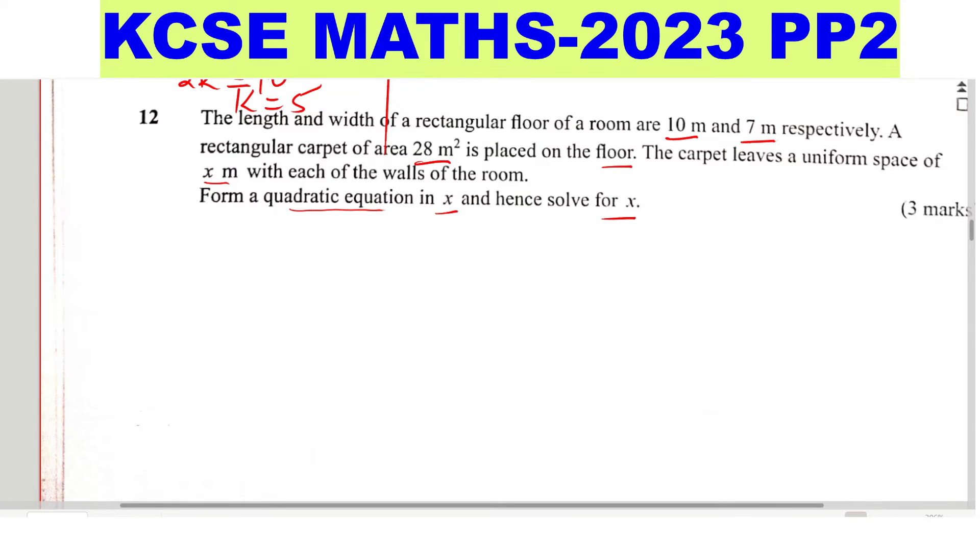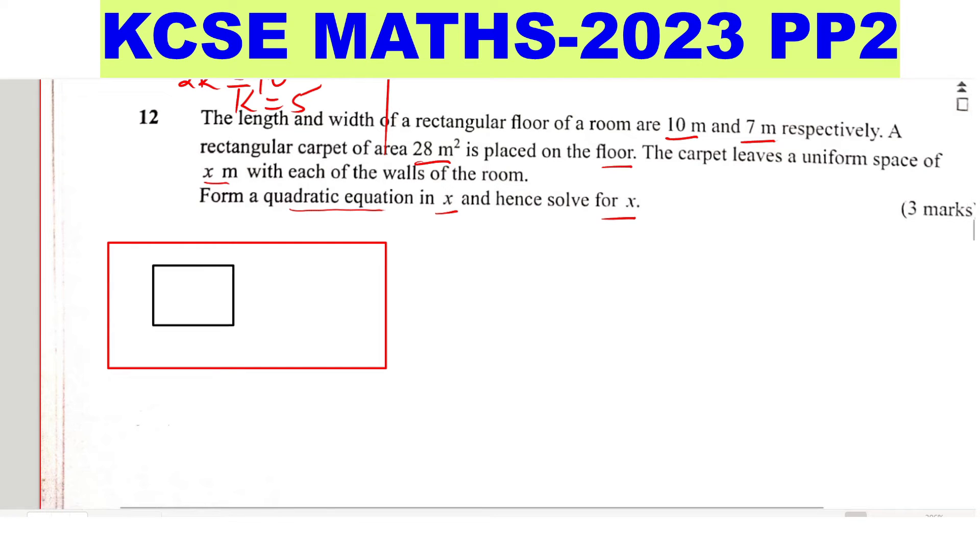So let us first sketch this rectangular floor 10 by 7. We sketch it. So that is how it is. And there is a carpet, a rectangular carpet of area. So carpet, indicate the carpet. The carpet is inside there. That is a sketch.